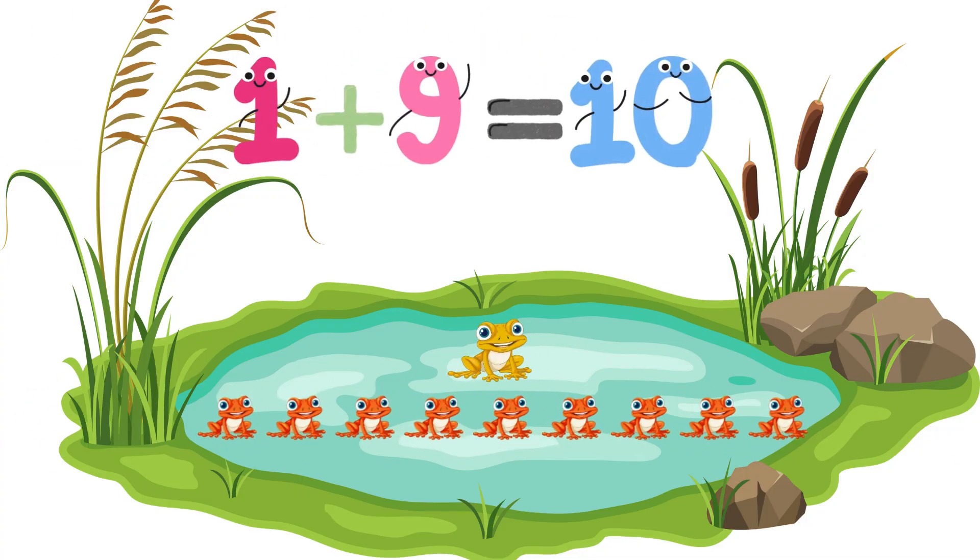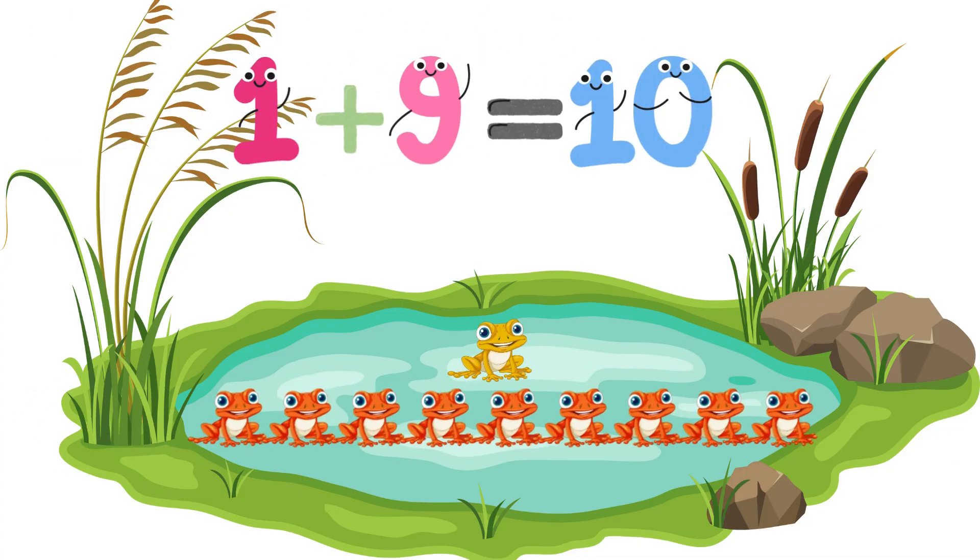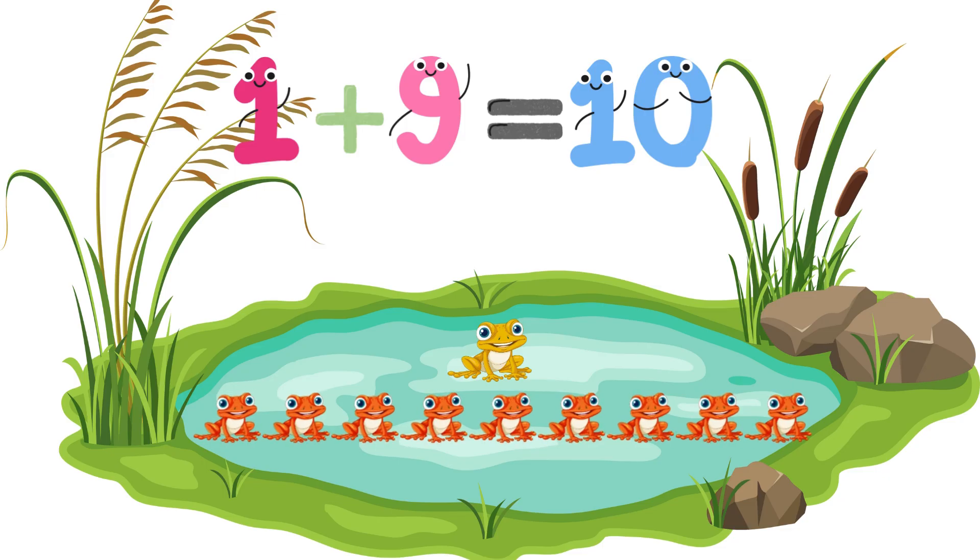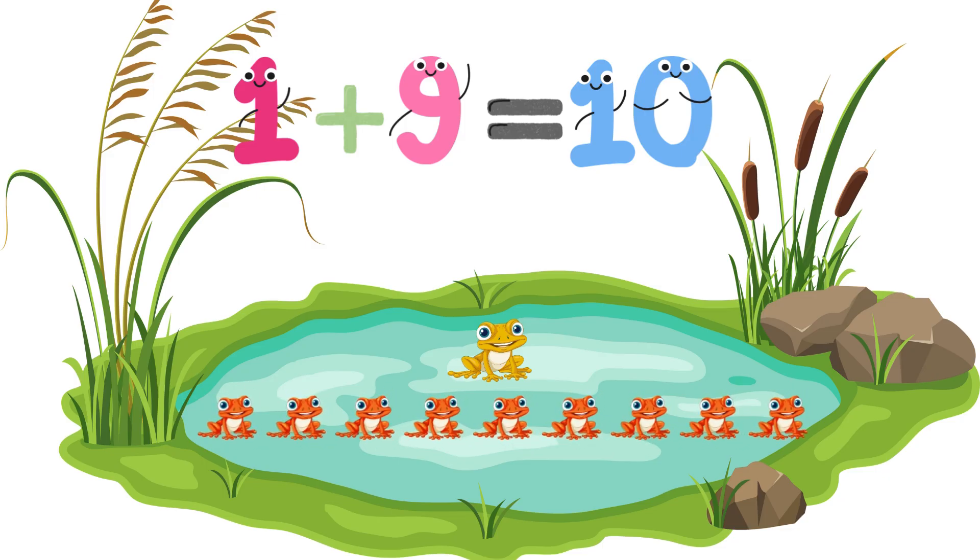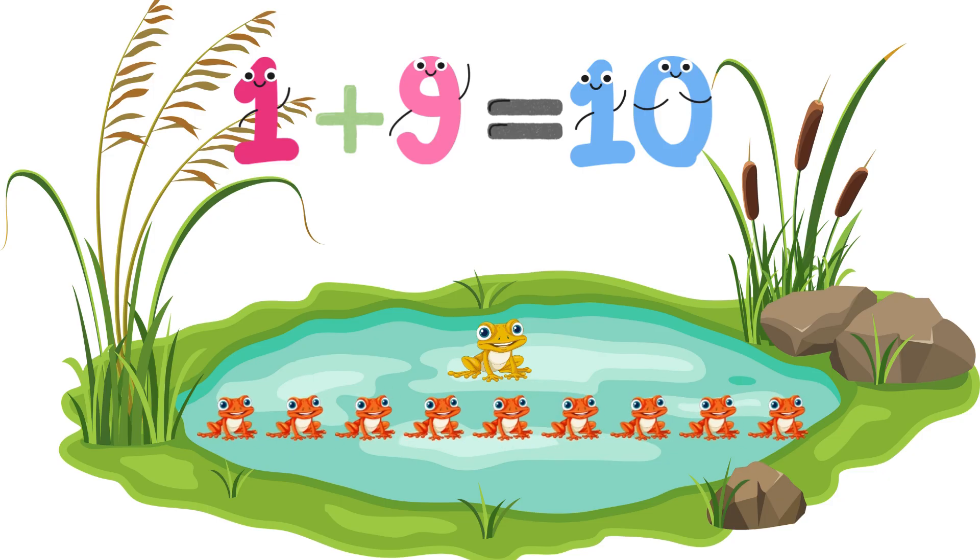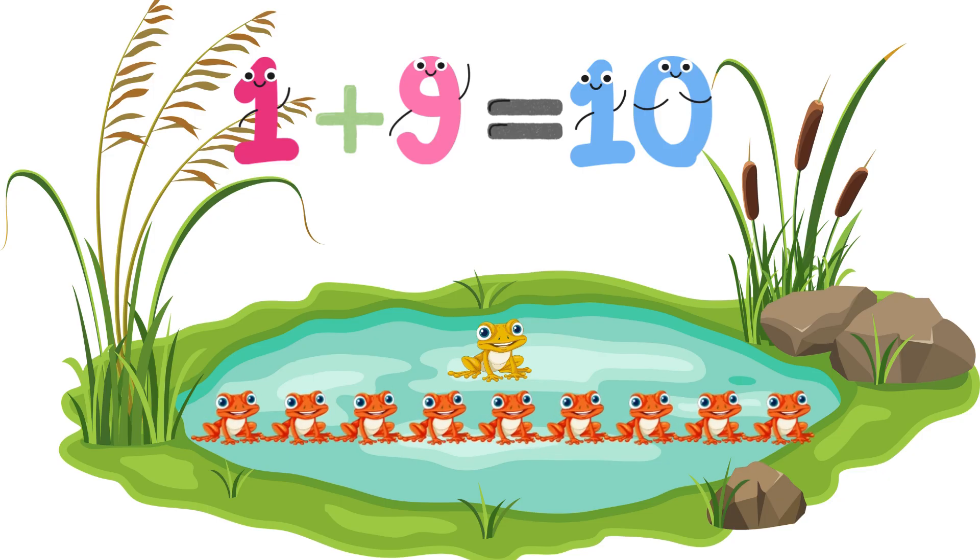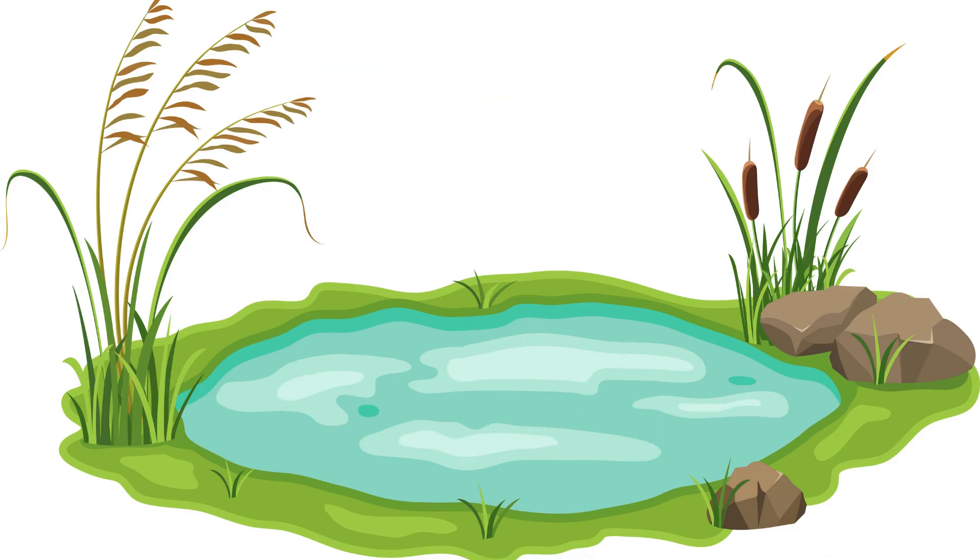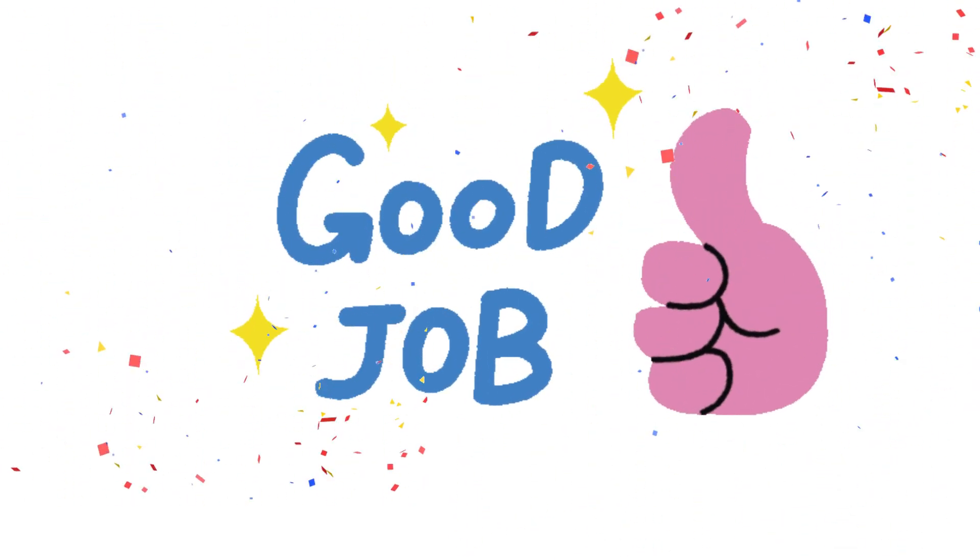1 and 9 are friends of 10. 1 yellow frog plus 9 orange frogs equals 10 frogs. Can you count the frogs? Tap the screen when done. Good job. You are a super counter.